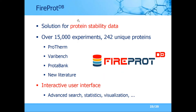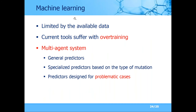Moving away from FireProt-ASR, I would also mention the newest child in the FireProt family — FireProt-DB — a database for storage and maintenance of protein stability data. Currently we store slightly over 15,000 experiments collected from various other datasets and new literature. As with other tools, we provide an interactive user interface with various statistics, visualizations of both sequence and structural features for training machine learning tools, and advanced search allowing users to interactively create subsets of the FireProt-DB database.